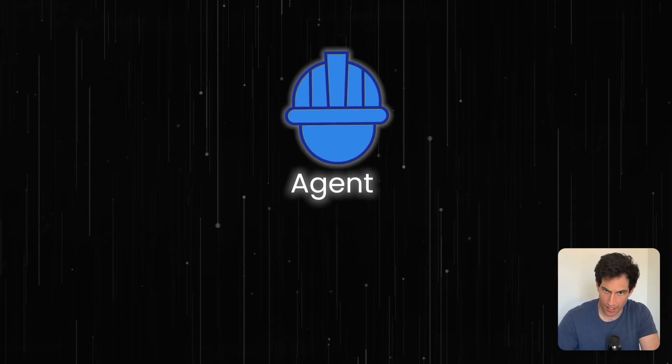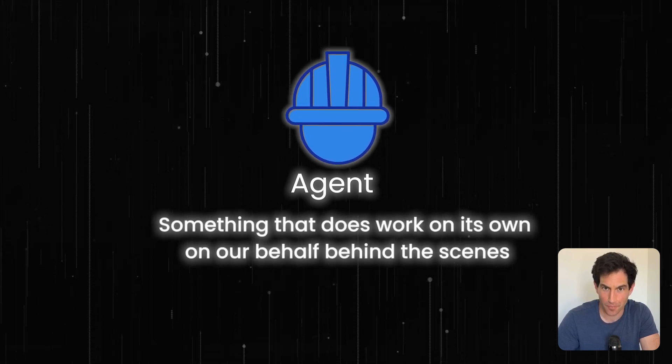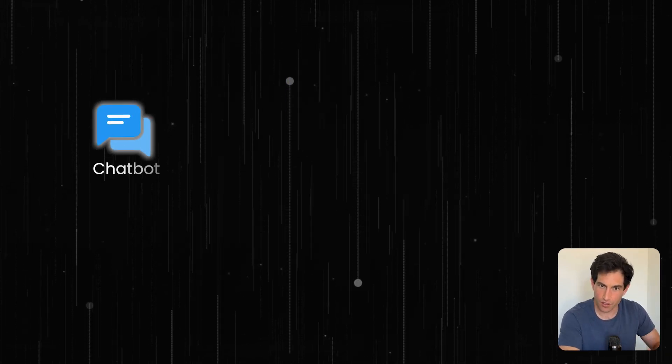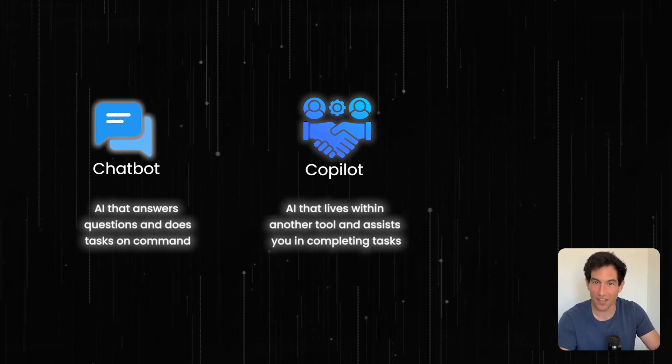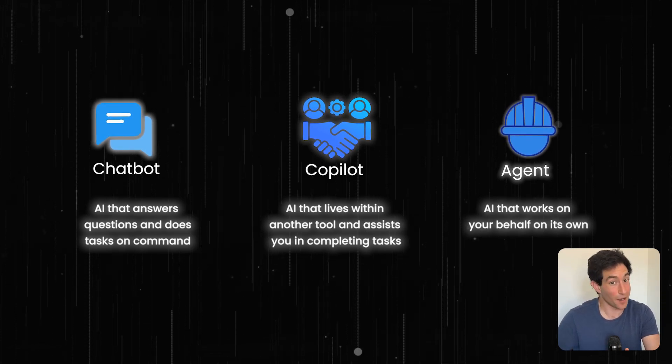So those are chatbot and copilot. In both of those modalities, we're having a direct interaction with the AI as we're doing something — either talking to it directly in the context of a chatbot, or receiving the copilot's assistance as we're using another tool. An agent, on the other hand, has a slightly different mode of interacting with us. An agent is something that does work on its own, on our behalf, behind the scenes. In the first two modalities you have to talk directly to the AI and interact with how it goes, whereas the AI agent will wake up on its own, do work on its own, and achieve some real-world task on your behalf without you needing to do anything. And that's why they're so cool — they can replace a meaningful chunk of our work without us needing to be hands-on keyboard in front of it.